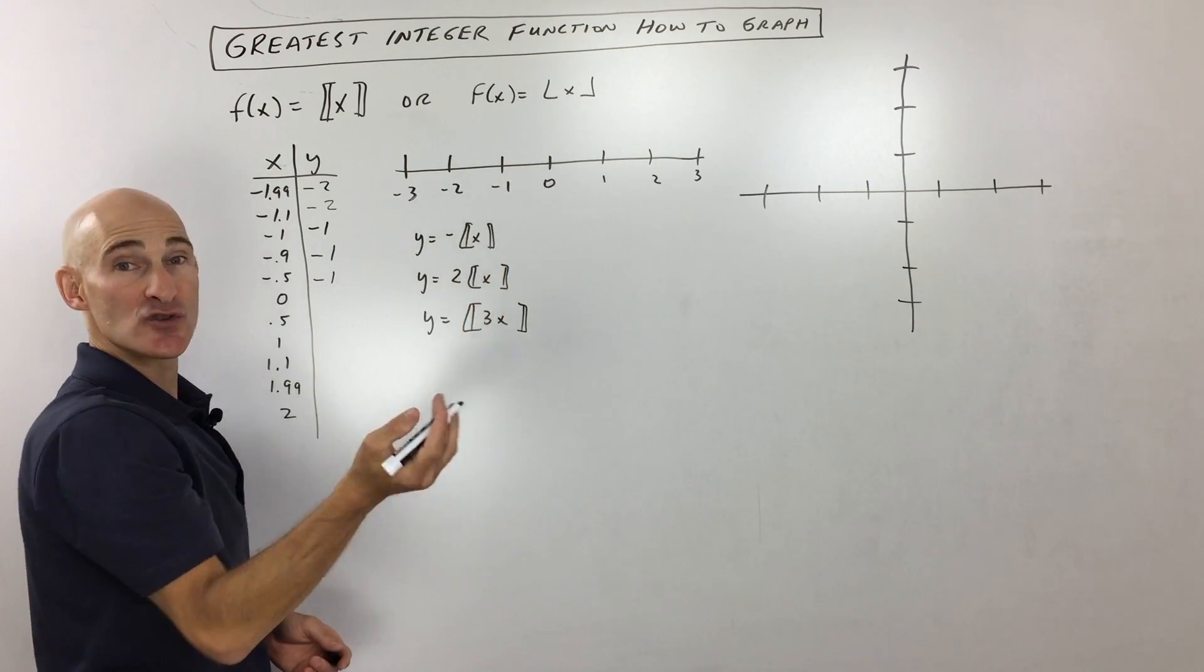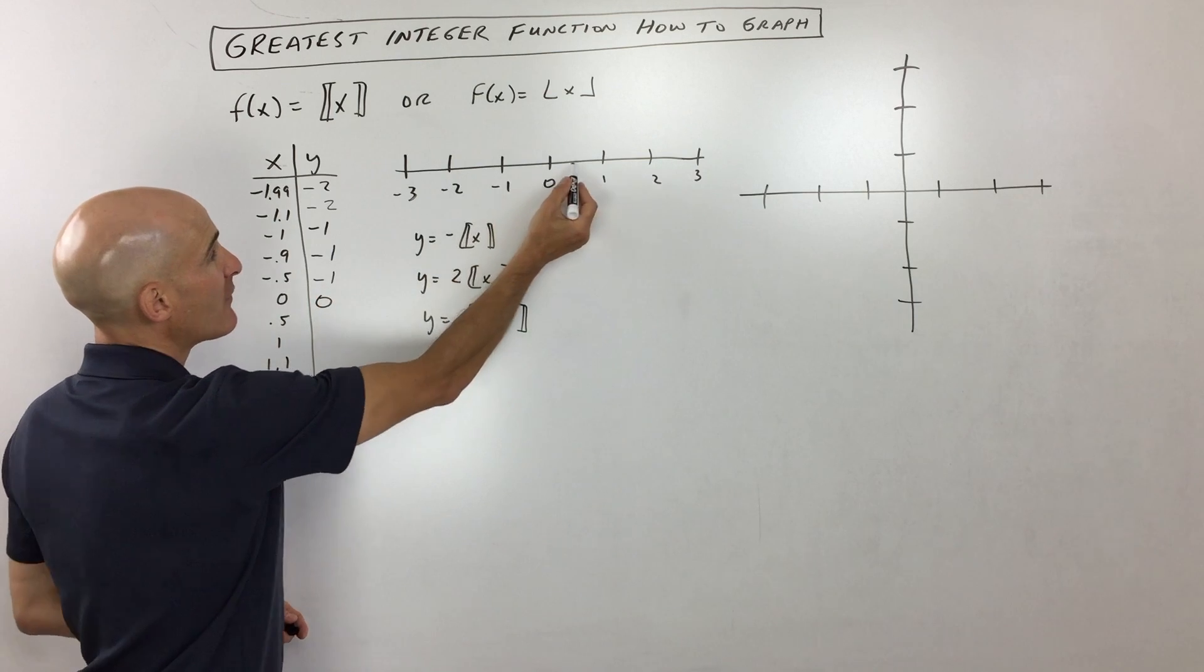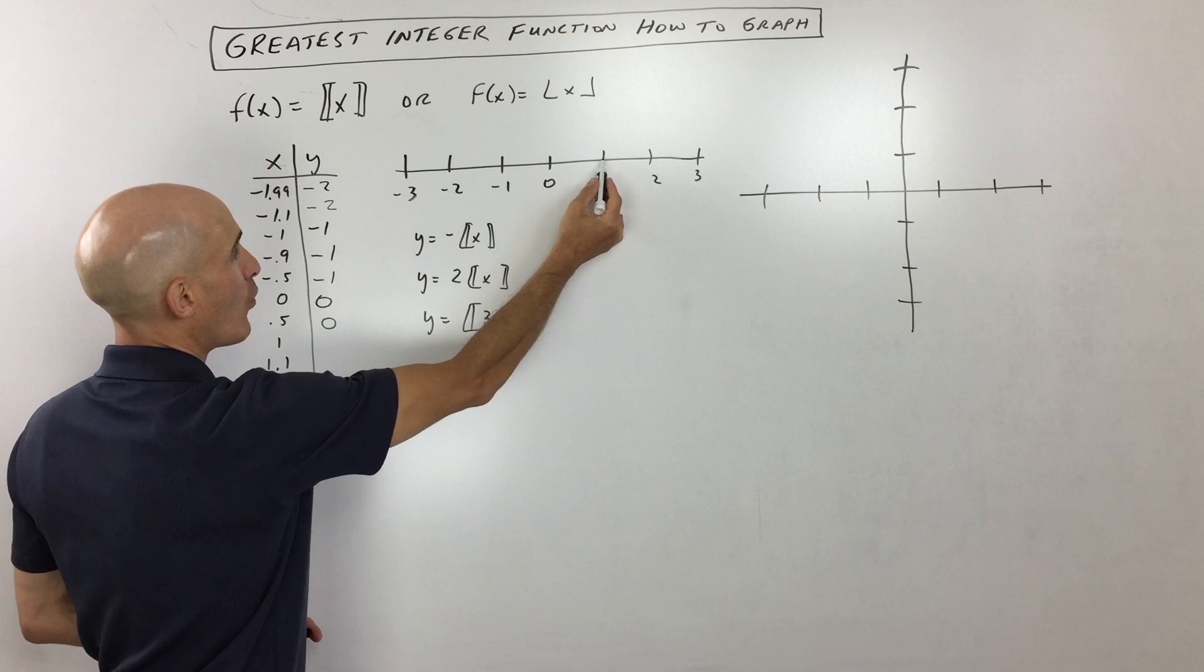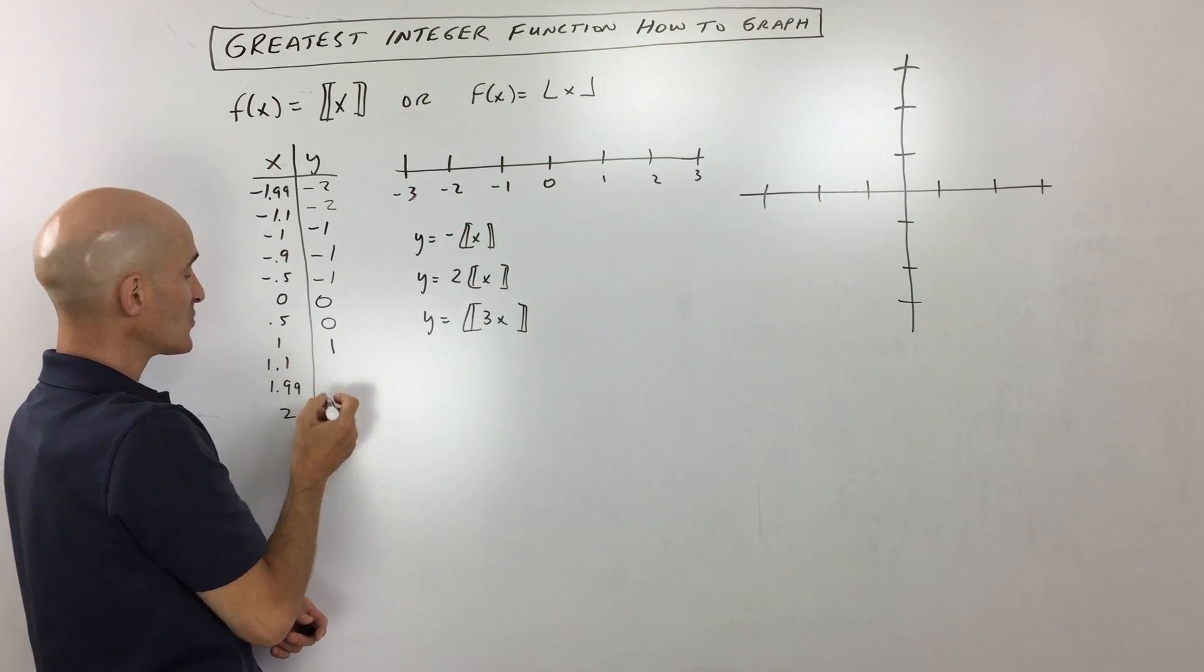0.0, you're on that integer value. So that stays at 0. 0.5, you're right here. You round again down to 0 to the left. 1, we're right on the integer value. So we stay at 1.